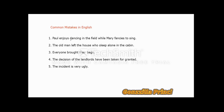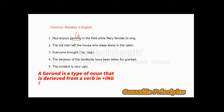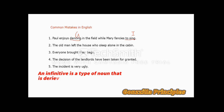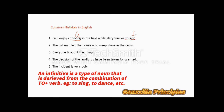Let's start with the first sentence: 'Paul enjoys dancing in the field while Mary fancies to sing.' This looks like a simple everyday sentence, but something is basically wrong with it. The word 'dancing' is a gerund. The rule of gerunds states that once a gerund is used in the first part of a sentence, a gerund must conclude it. Here, 'to sing' is an infinitive. Infinitives and gerunds are both known as nominalization, and you cannot use these two different forms together in a single sentence.